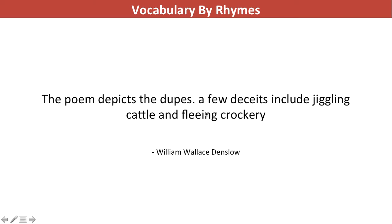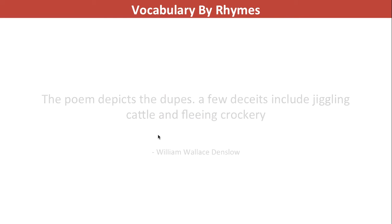Let's take another poem — one that depicts dupes. 'A few deceits include jiggling cattle and fleeing crockery.' It was written by William Wallace Denslow. Let's see if you can tell which poem this is. Duping means cheating someone. Jiggle relates to juggling. Fleeing is running. So it talks about jiggling the cattle — juggling with cows — and fleeing crockery — an inanimate dish running away. What could it be?